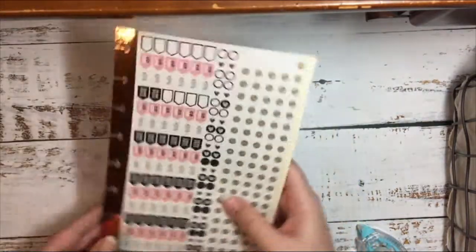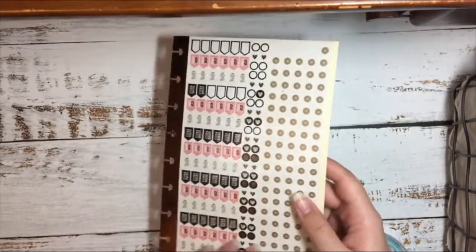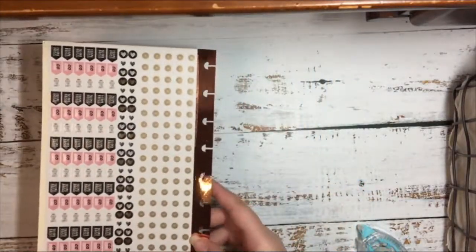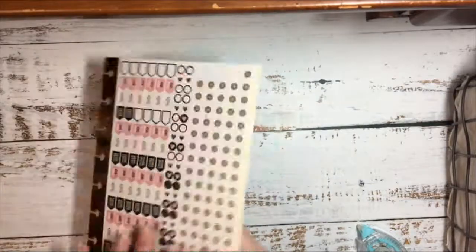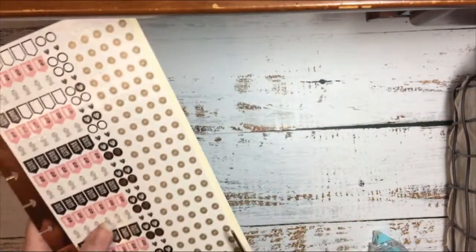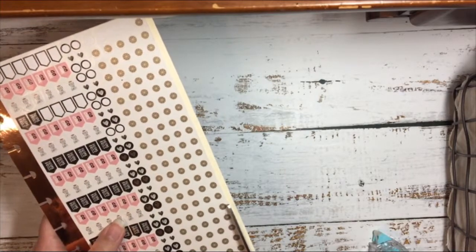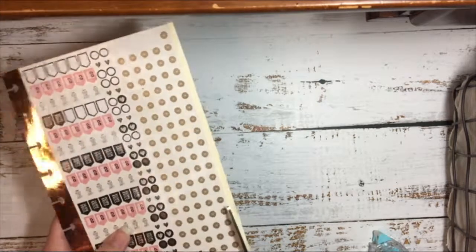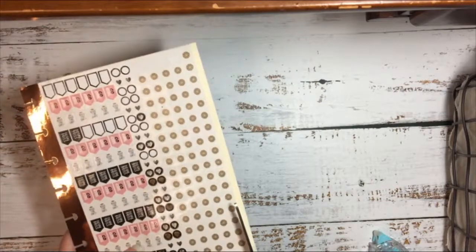Smooth it out. There, that way whenever you're turning through your planner or your book, you can flip it over and it's front and back. So now I'm going to go ahead and cut this edge off, that way you can see how it looks without it.